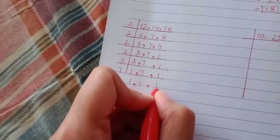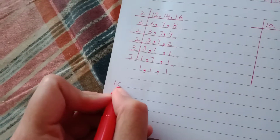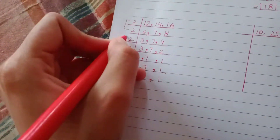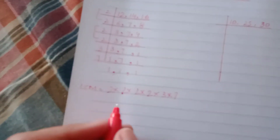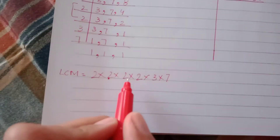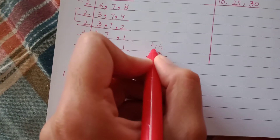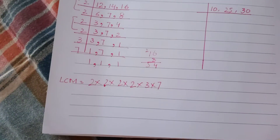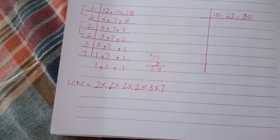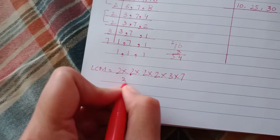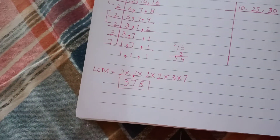Now 7 divides into 7, giving 1. Now let's see what we multiply: the LCM equals 2 × 2 × 2 × 2 × 3 × 7, which is 2 to the power of 4. So 2 to the 4 is 16; 16 times 3 is 48... giving 54; and 54 times 7 equals 378. So 378 will be your answer.